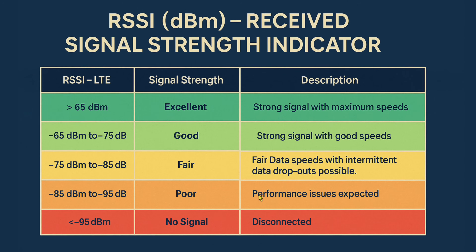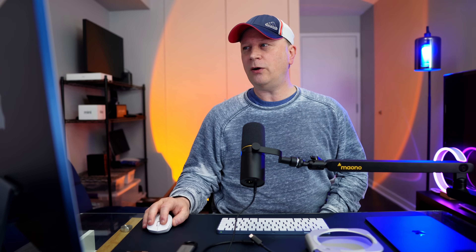Here's the chart that explains what that number means. Keep in mind these ranges aren't set in stone — they're perceived values — but they give a good idea. At negative 63, I'm in the excellent range, meaning strong signal with maximum speeds. As you go higher in the negatives — say negative 75 or negative 85 — you move into poor performance.